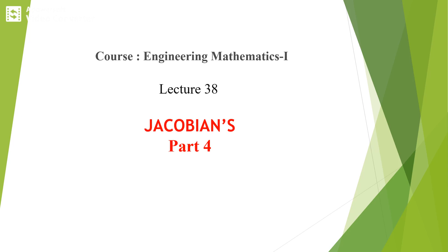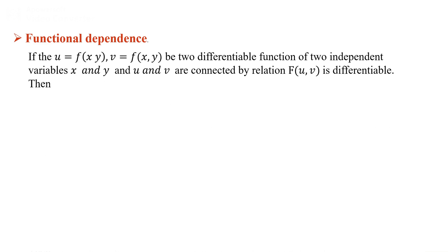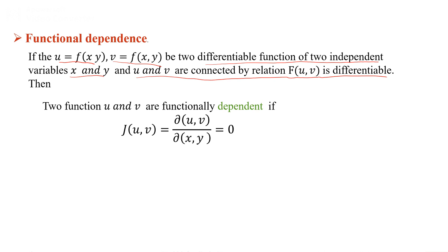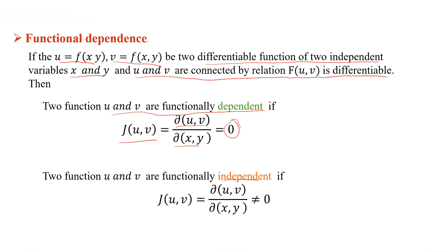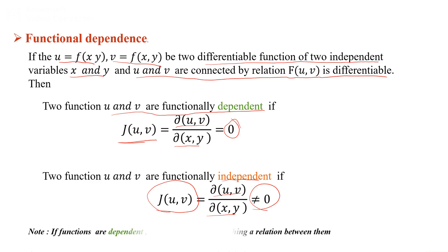Lecture 38: Jacobian Part 4 - Functional Dependency. Suppose we have a function u = f(x, y) and v is a function of x, y. We have two differentiable functions with two independent variables x and y. If u and v are connected by some relation f(u, v) that is differentiable, then u and v are functionally dependent if the Jacobian of (u, v) — that is, the partial derivative of u, v with respect to x, y — is zero. They are functionally independent if the Jacobian is not equal to zero. Note that if functions are dependent, they can establish a relation between them.